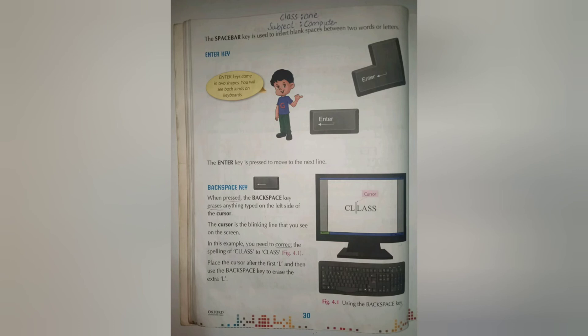The next key is the enter key. The enter key is present on the keyboard in two shapes. We press the enter key to move to the next line. If we have finished a sentence on the computer and want to go to the next line, we press the enter key and the cursor moves to the next line.